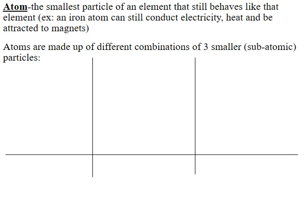So let's talk about the actual definition of the term 'atom.' An atom is defined as the smallest particle of an element that still behaves like that element. For example, an iron atom can still conduct electricity, heat, and be attracted to magnets no matter where that iron atom is. And atoms are made up of a combination of three smaller particles — and when we say smaller than the size of an atom, the term we use is 'subatomic.'